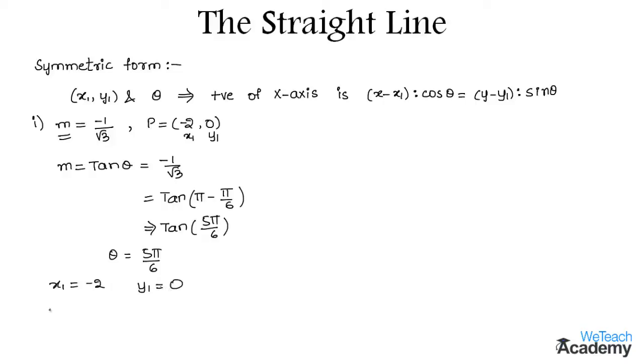The equation of a straight line in symmetric form is given by the formula: x minus x1 is to cos theta equals y minus y1 is to sin theta. Or else the formula can be written as x minus x1 divided by cos theta equals y minus y1 divided by sin theta.